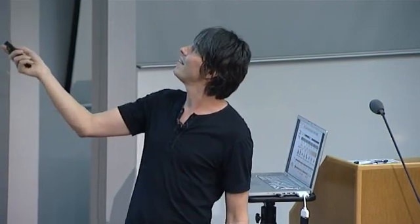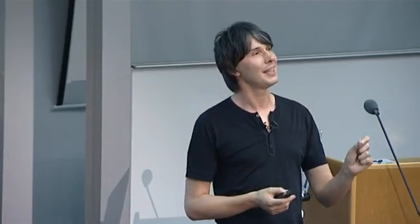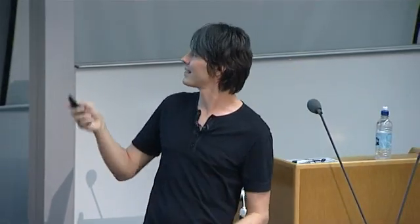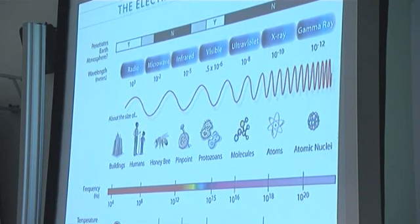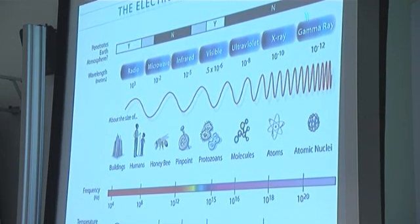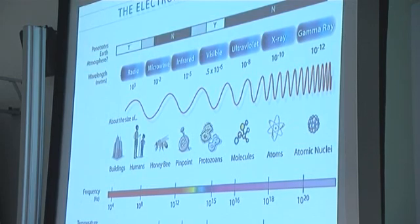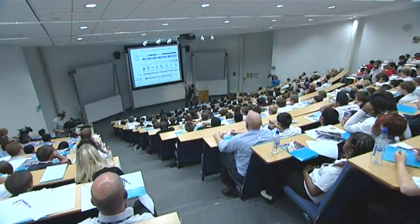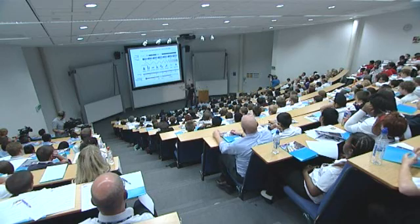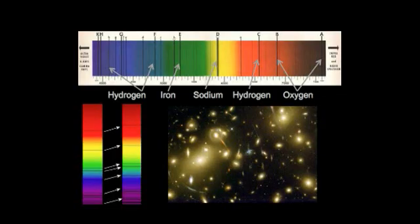And you can go the other way. So ultraviolet light, x-rays, gamma rays, gamma radiation, where the wavelengths are a million millionths of a meter. So the only difference between a gamma ray or an x-ray and a radio wave is the wavelength of the light.